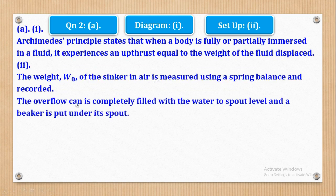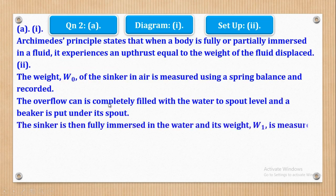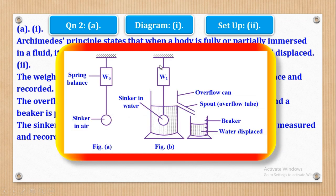Next, the overflow can is completely filled with water to spout level, and a beaker is placed under its spout. This beaker is initially empty and the sinker is not yet in the overflow can. The sinker is then fully immersed in the water, and its weight W₁ is measured and recorded. The displaced water flows out into the beaker, and the spring balance now reads W₁.